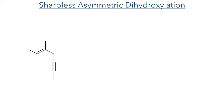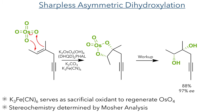The synthesis started with the Sharpless asymmetric dihydroxylation using AD mix beta. This mixture contains an osmium salt, a chiral ligand, base, and potassium iron hexacyanide, which serves as an oxidant. This generates osmium tetroxide, which undergoes a cycloaddition with the alkene and is hydrolyzed to form a syn-diol, producing the compound in 88% yield and 97% ee, which was determined by Mosher analysis.